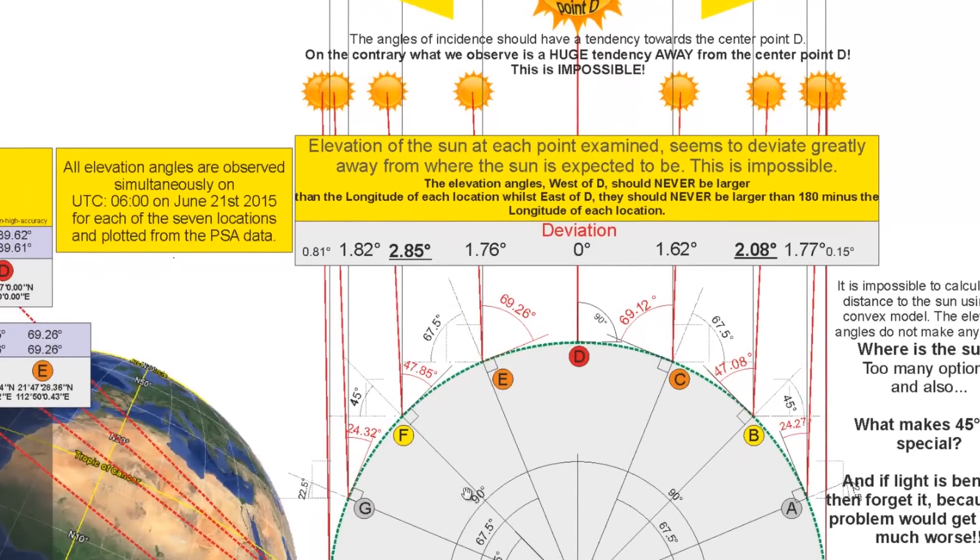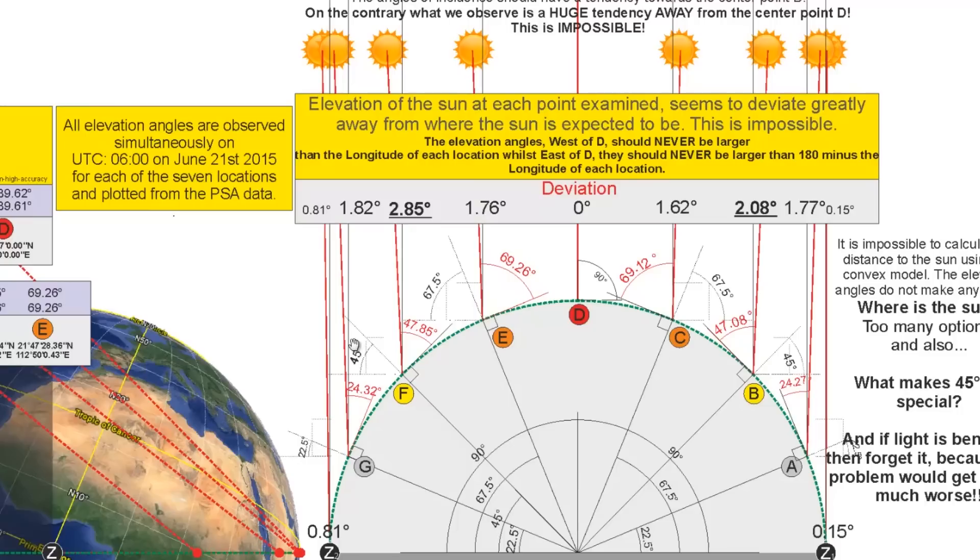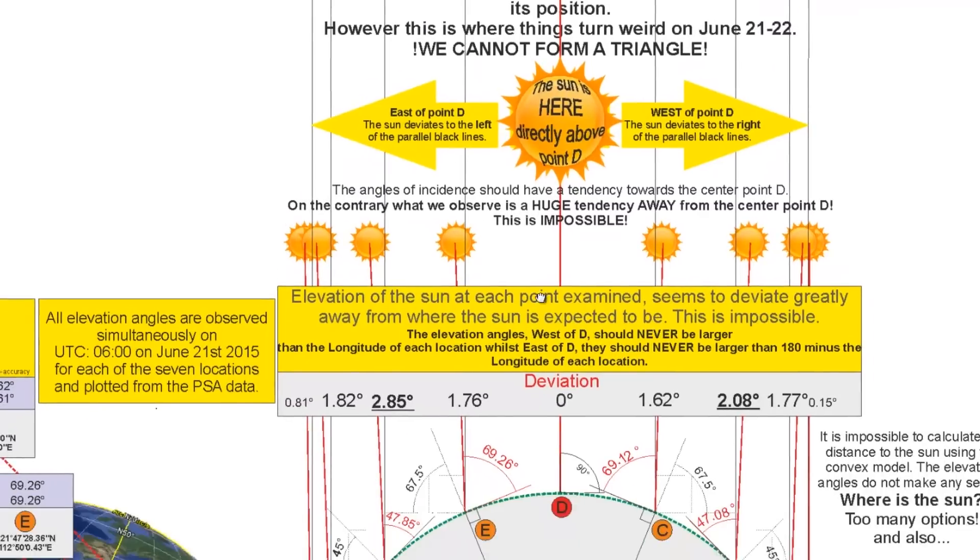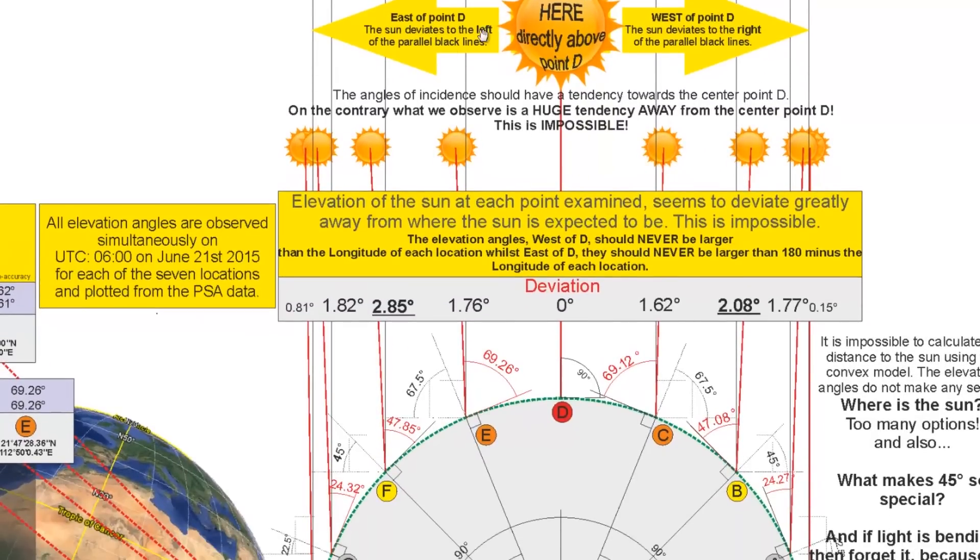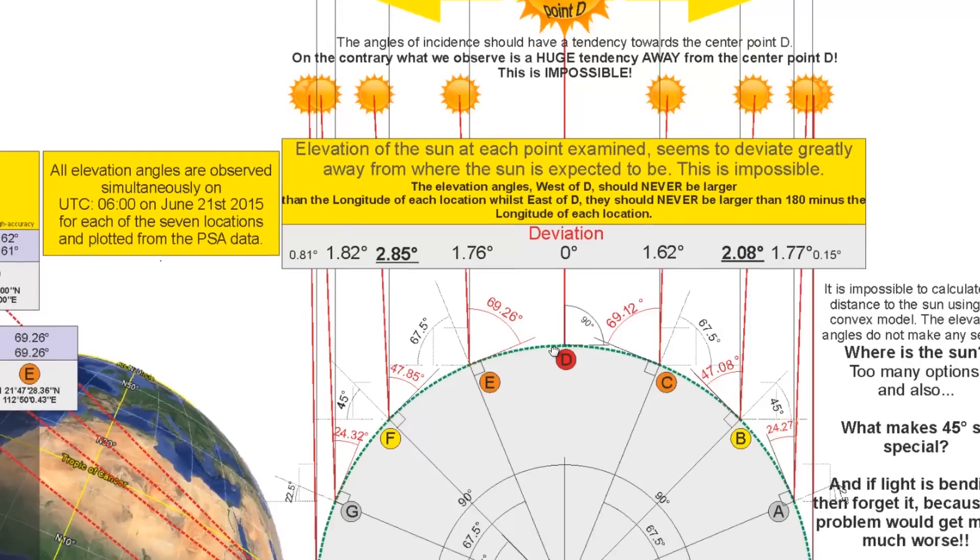As you can see from the plotted graph where we see the elevation angles, we see that the elevation angles at each point is pointing away from the perpendicular at point D. If we're calculating elevation angles pointing towards the center of the Sun disk, then how is this possible? East of point D, the Sun deviates to the left of the parallel black lines and west of point D, the Sun deviates to the right of the parallel black lines. The angles of incidence should have a tendency towards the center, point D. On the contrary, what we observe is a huge tendency away from the center point D. And this is, of course, impossible.